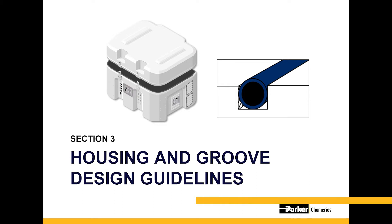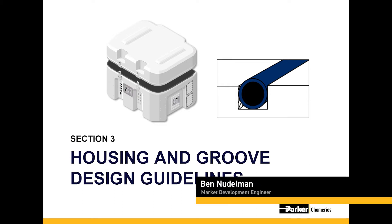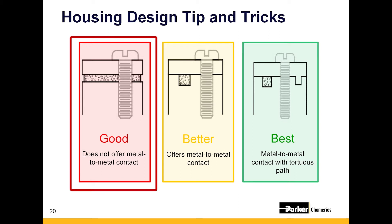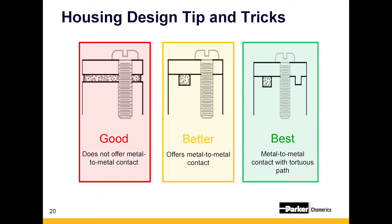Our next section covers housing and groove design guidelines. While all of these groove and housing designs are valid and common, some tend to be better in terms of EMI shielding and environmental sealing. On the left you see a flat gasket between a cover and a housing — while typically a good environmental seal, it doesn't offer metal-to-metal contact and can therefore pose some design challenges.